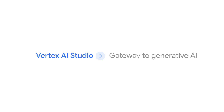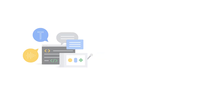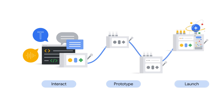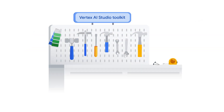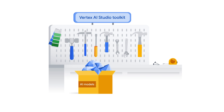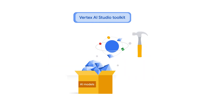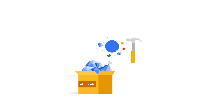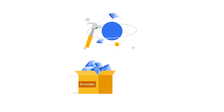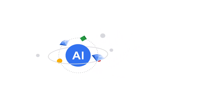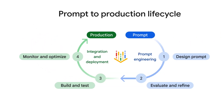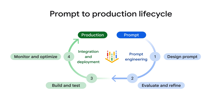So, what is Vertex AI Studio? Simply put, Vertex AI Studio is your gateway to generative AI. It's a development environment for developers and non-developers to interact with Gen AI models, prototype their ideas, and launch them into production. Envision Vertex AI Studio as an innovative workshop where Gen AI models are your raw materials. You are the craftsperson, and the Vertex AI Studio Toolkit is your arsenal for shaping and refining these models into powerful AI solutions. Join Ann, Bea, and Ian to learn how to use this magical tool from prompt to production.